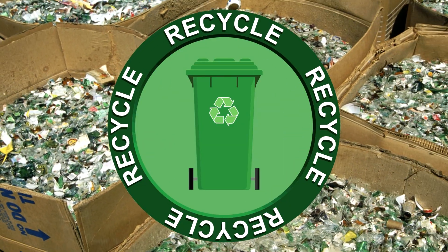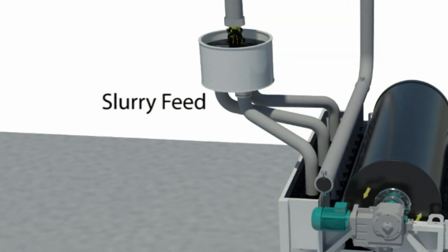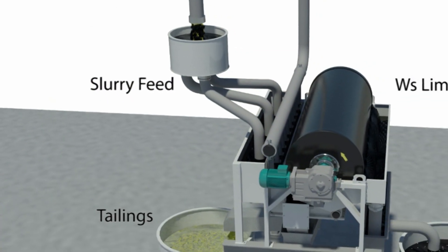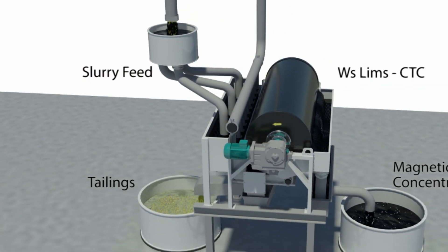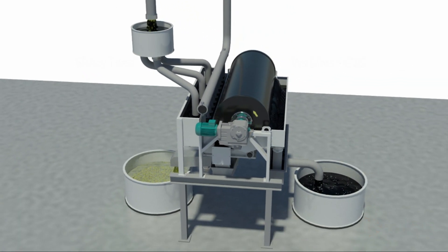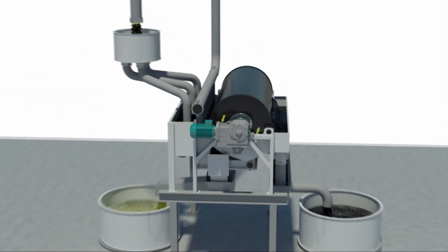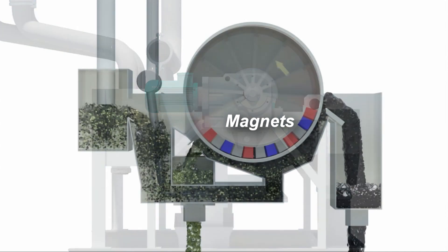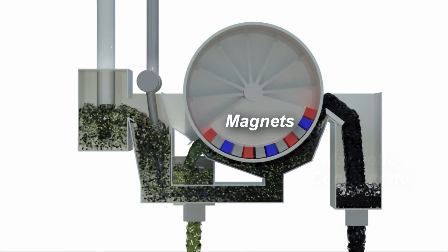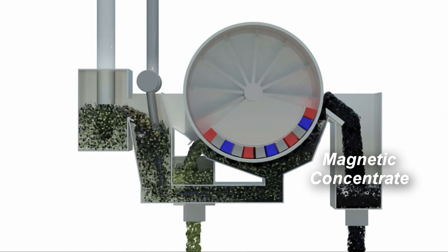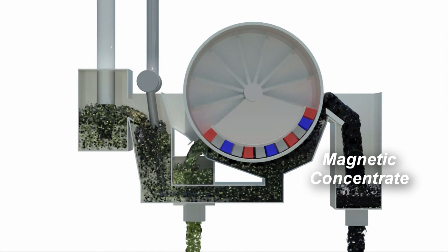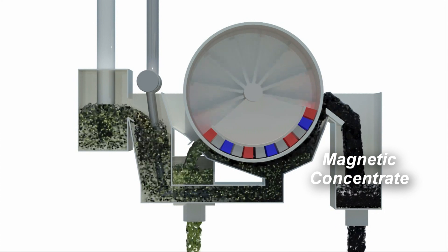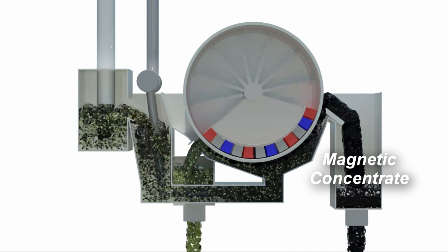The differences in physical properties of materials being separated are used to separate them. For example, a mixture of magnetic and non-magnetic particles can be separated using large magnets within separating tumblers. In every case, the material must first be broken apart into small enough particles to enable them to be separated.